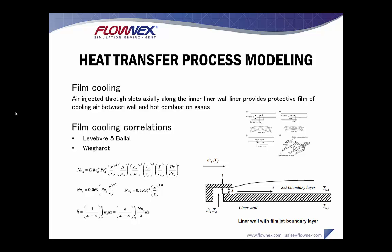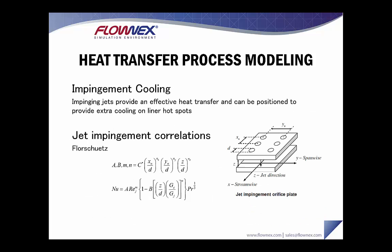Film cooling is air injected through slots along the inner liner wall, providing a protective film of cooling air between the wall and the hot combustion gases. This is a critical cooling mechanism that needs to be simulated within your network, and it can be represented using several well-known correlations implemented in Flownex. Any user-defined function or correlation can also be quite easily implemented. Impingement cooling is where jets provide an effective means of heat transfer and can be positioned to provide extra cooling on liner hot spots. The jet impingement correlation implemented in Flownex is pretty standard within the gas turbine industry.